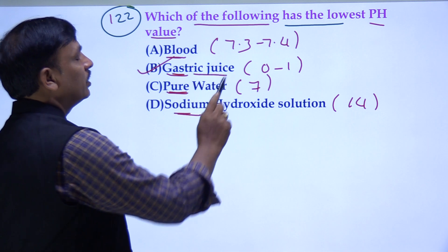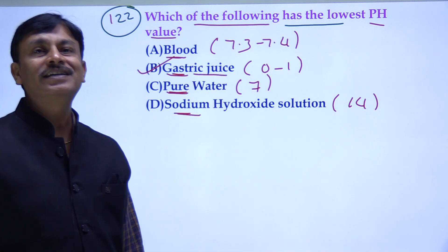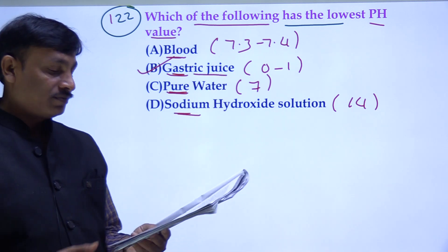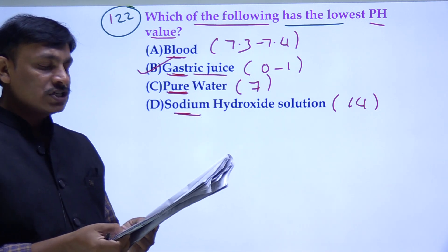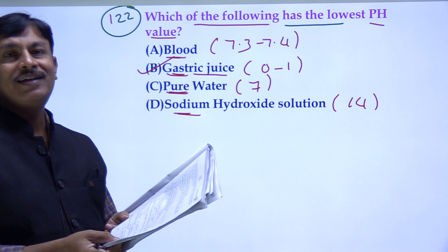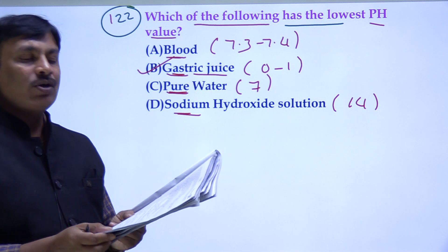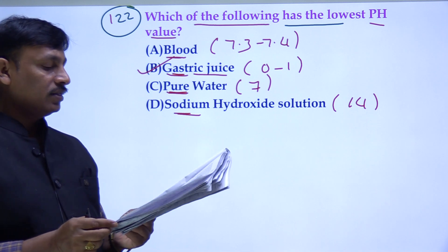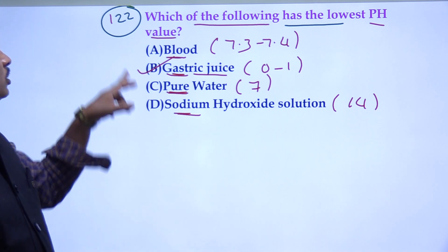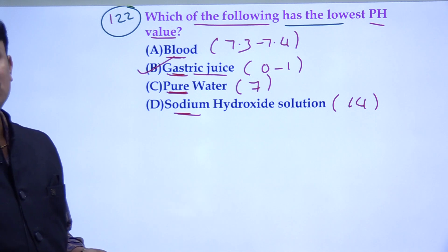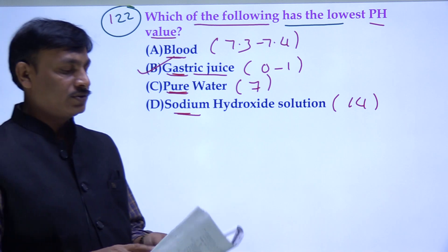The gastric juice is in the stomach and has a pH of approximately 1, which is the lowest pH value among all the given options.